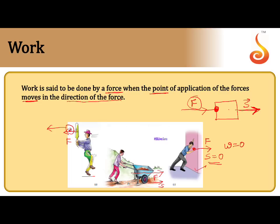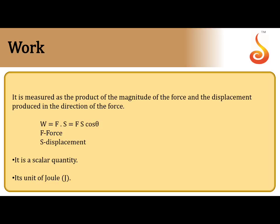Now, if you remember, while we discussed about vectors, you had a doubt: when I have two vectors, should I multiply them vectorially or should I find the scalar product? Here you observe force is a vector quantity, displacement is a vector quantity, and the definition says they both should move in the same direction. The product of two vectors in the same direction is a dot product. So, the work done is given by the dot product of force and displacement — it is the product of the magnitude of the force and the displacement in the direction of the force.